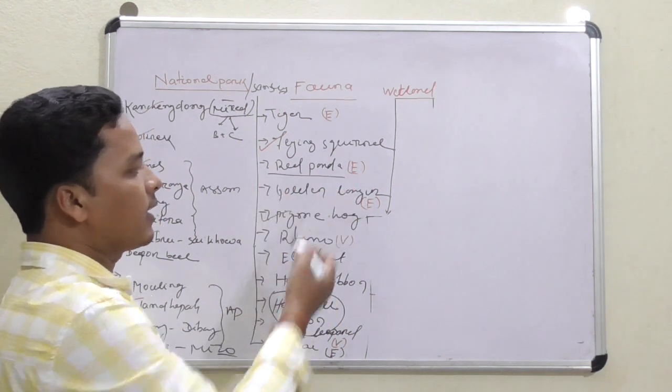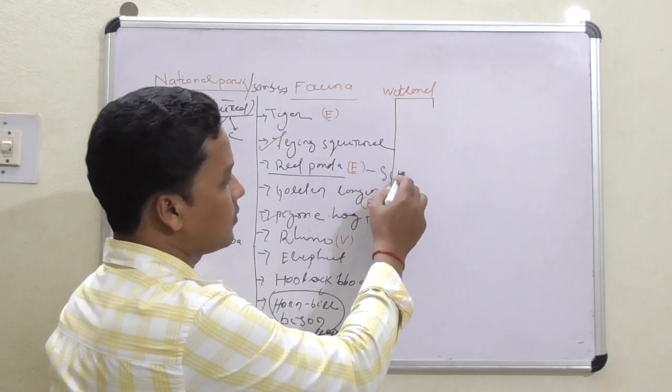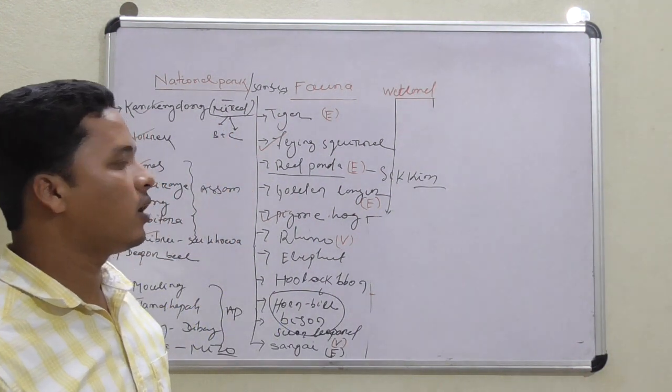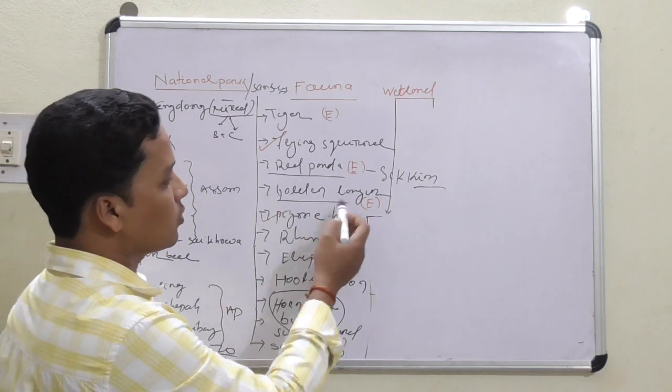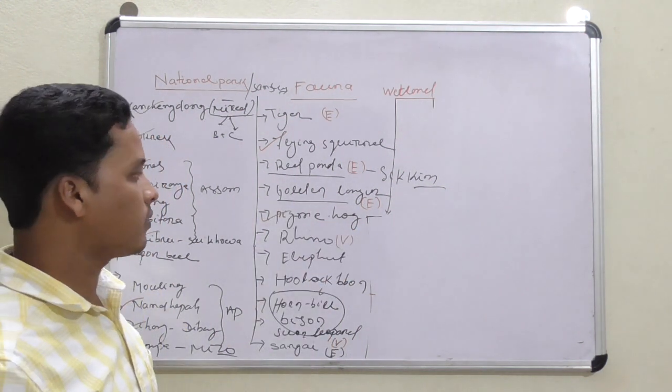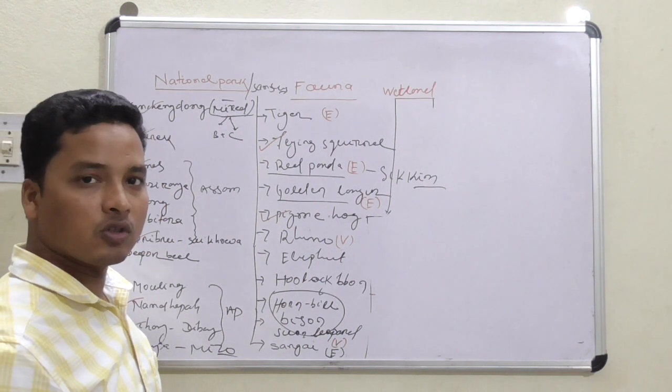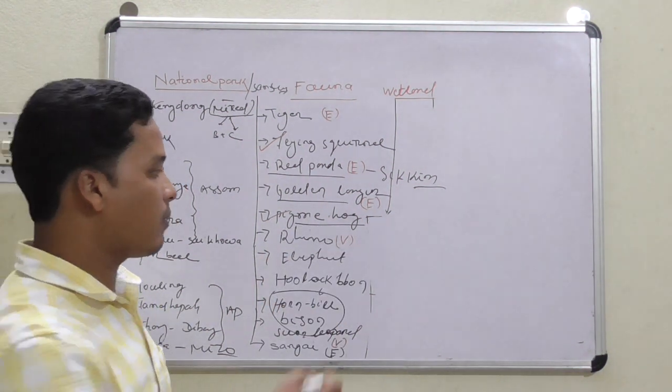Next, red panda, endangered, found in Sikkim, one of the most beautiful states of India you can visit. Golden langur is also found, which is also found in Nilgiri in the Western Ghats. Pygmy hog, critically endangered, found in Assam.